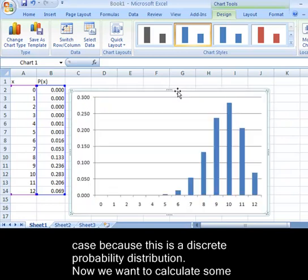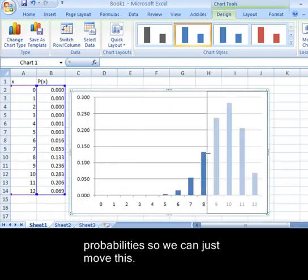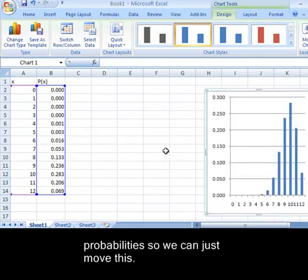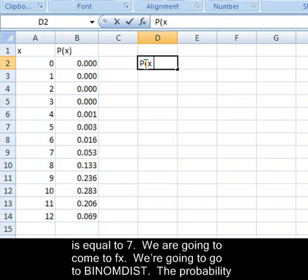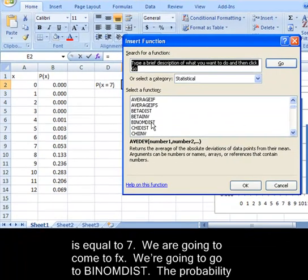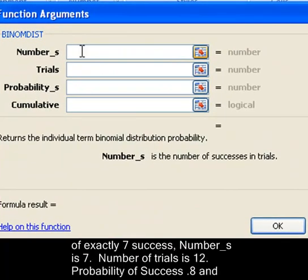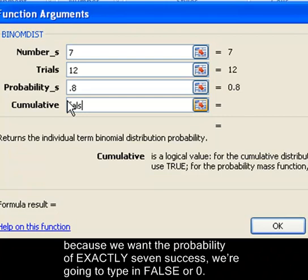Now we want to actually calculate some probabilities. The first thing I would like to do is show you again how to calculate the probability that x is equal to seven. We're going to come to fx, we're going to go to BINOMDIST, the probability of exactly seven successes—number of successes seven, number of trials twelve, probability of success point eight, and because we want exactly seven successes, we're going to type in the word false or zero.